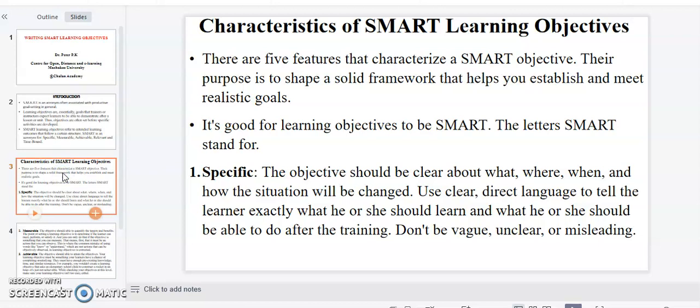In the following section I want us to look at the characteristics of SMART learning objectives. There are five features that characterize a SMART objective, and their purpose is to shape a solid framework that helps you establish and meet realistic goals. It's good for learning objectives to be SMART. The letters we've just stated stand for the following. So in this section I want us to look at the characteristics of SMART learning objectives one at a time.